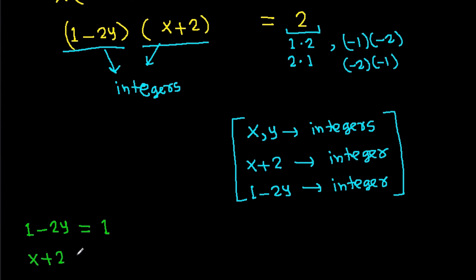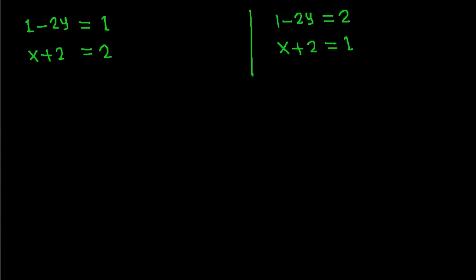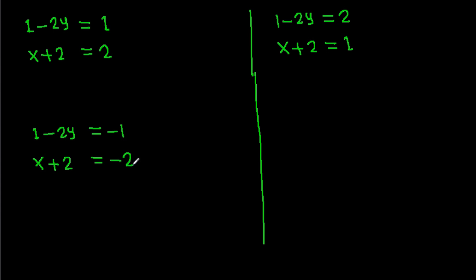In case 1, (x plus 2) can be 2. In case 3, (1 minus 2y) can be minus 1, and (x plus 2) can be minus 2. In case 4, (1 minus 2y) can be minus 2, and (x plus 2) can be minus 1.